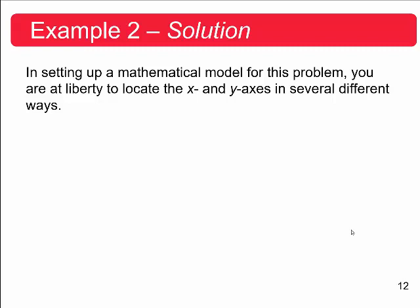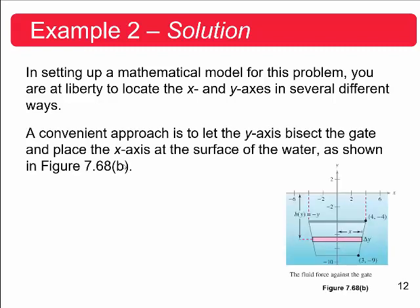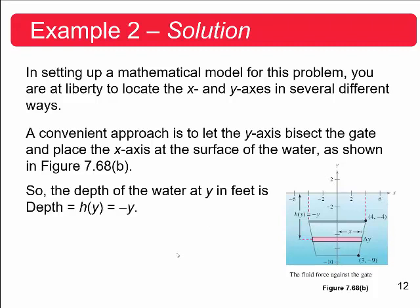So the next thing we need to do in setting up a mathematical model for this problem, you are at liberty to locate the x and y axis in several different ways. I'll show you how I'm going to do it. I'm going to set it up just like at the origin here. A convenient approach is to let the y axis bisect the gate and the plane, the x axis to the surface of the water, okay. So here's the x axis, here's the y axis as I've shown, okay. So now what is the depth? The depth of the water at y feet is equal to the following. So notice that here's the origin. So as we go down the origin, we have negative values of y. So we're going to have our height actually be negative y. So it's going to change those negative values to positive because we're talking about the depth. So the depth is going to be a positive report here, okay.